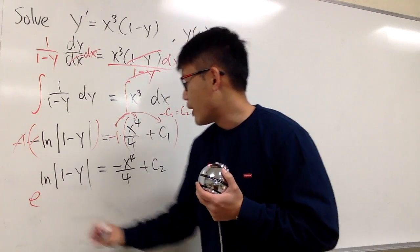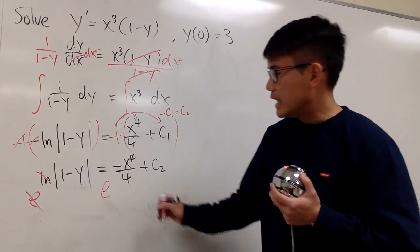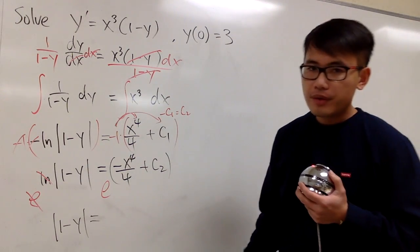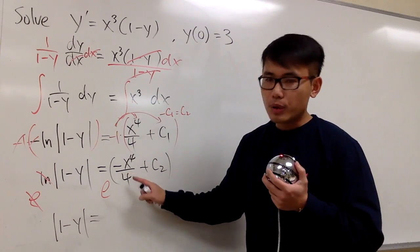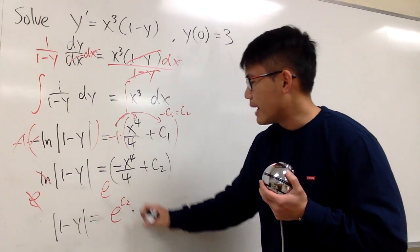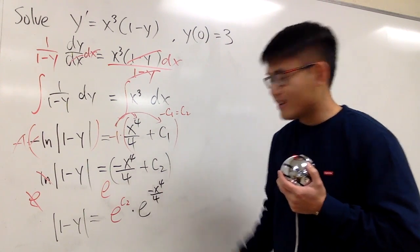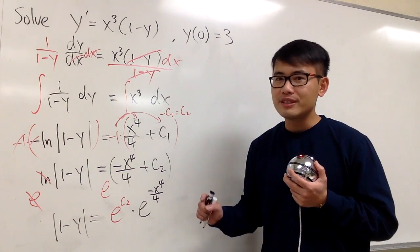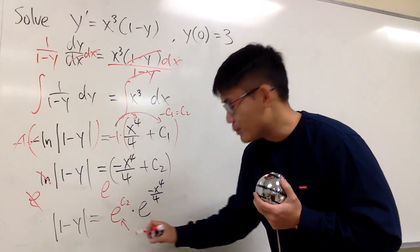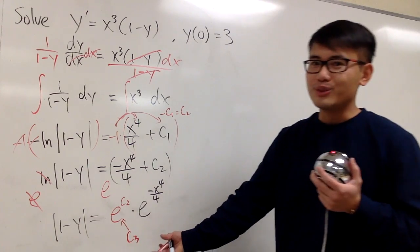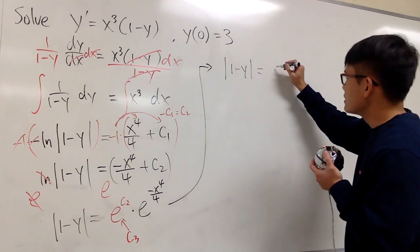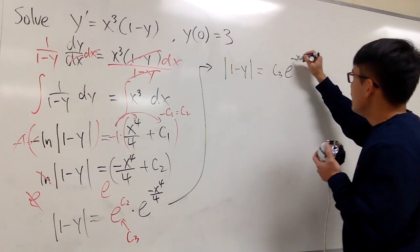To get rid of the ln, let's raise e to this power on both sides so they cancel. On the right-hand side, both terms are powers, so when adding powers we multiply the bases: that gives us e to the c2 multiplied by e to the negative x to the fourth power over 4. Since e to the c2 is a constant raised to a constant, it's just another constant — let's call it c3. So the absolute value of 1 minus y equals c3 times e to the negative x to the fourth power over 4.